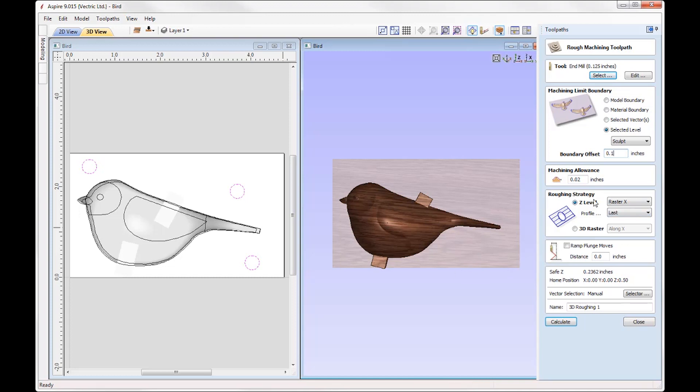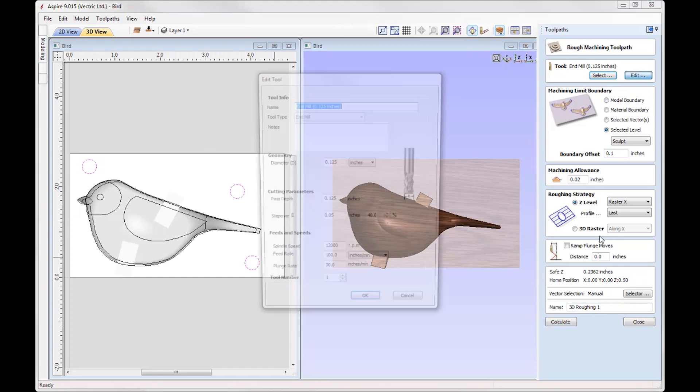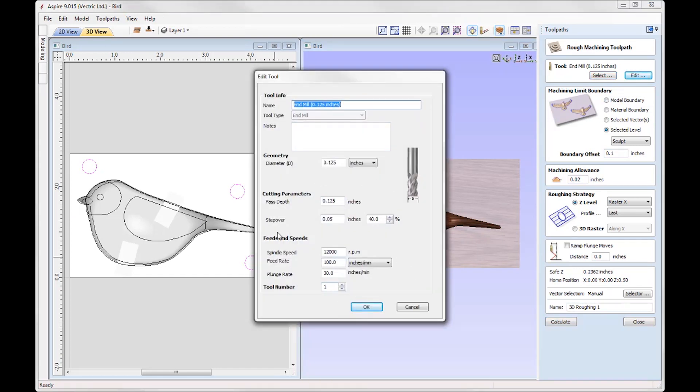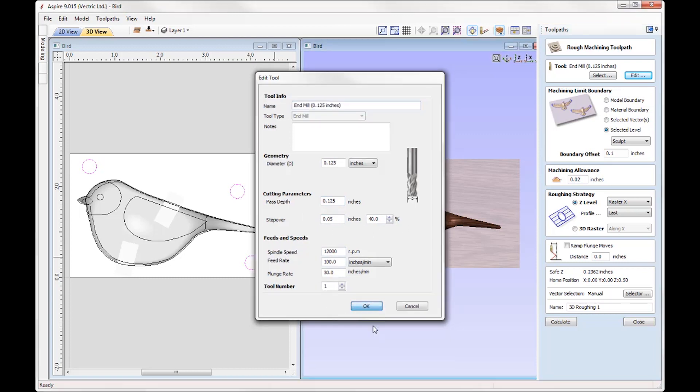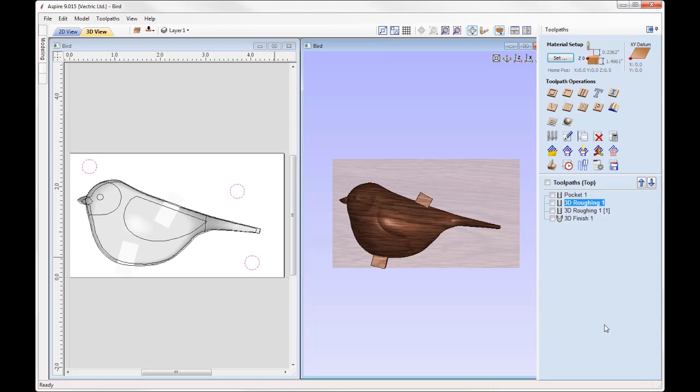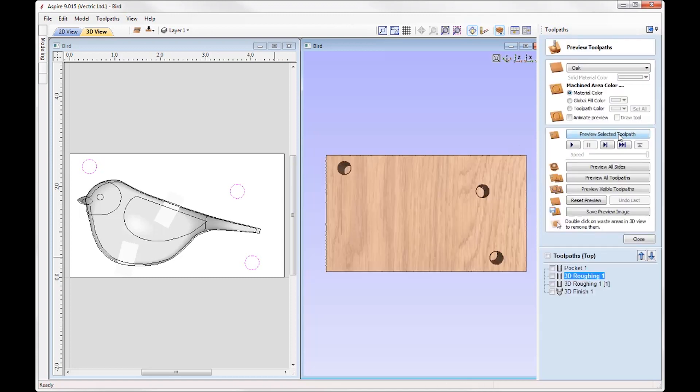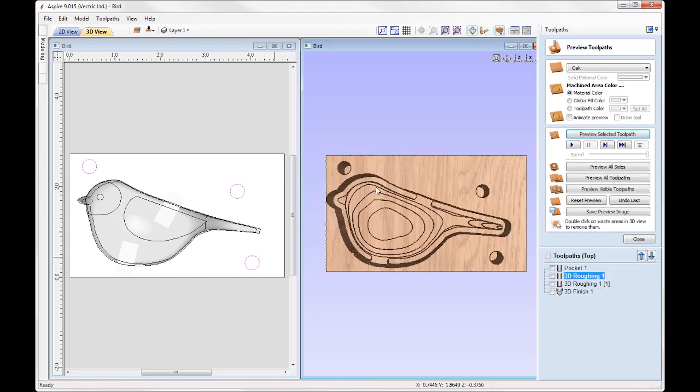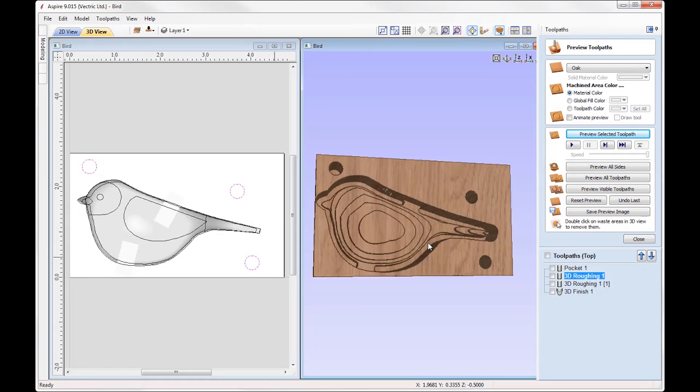And this one is done in a Z level strategy where we're going to raster along the X axis. It's going to go back and forth. If we look at some of the parameters we've got in the tool, we're doing a pass depth of an eighth of an inch, so we're taking the full diameter there. And we've got a step over at 40%, so pretty standard here. So let's just take a look at how that looks. So you can see all of our steps there like so.